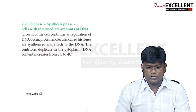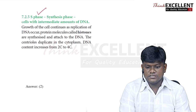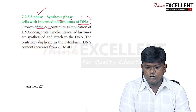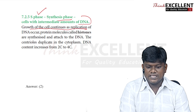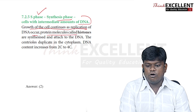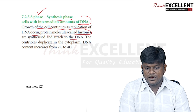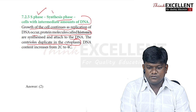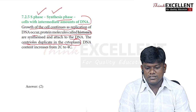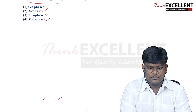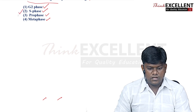Question 182: during S phase (synthetic phase), there are intermediate amounts of DNA. Growth of the cell continues as DNA replication occurs. Protein molecules called histones are synthesized and attached to the DNA. Centrioles are duplicated in the cytoplasm during S phase. So option 2 — centrioles are duplicated in S phase — is the right answer.